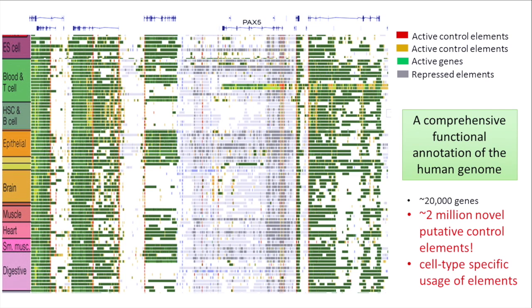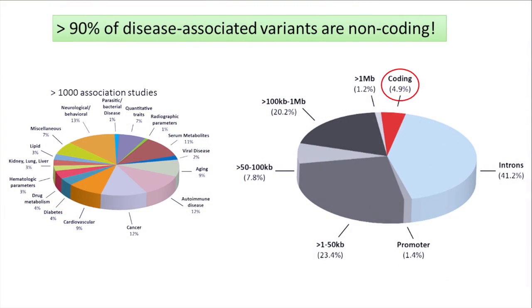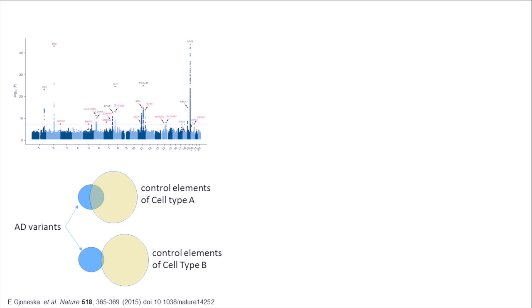After doing this analysis across the whole genome and integrating the entire data cube, we identified 2 million novel control elements in the human genome. These 2 million elements control just 20,000 genes — an extremely complicated control circuitry with highly cell-type-specific activity. This is relevant to disease because if you take the disease-associated variants found by genome-wide association studies, only about 5% actually break genes. The remaining 95% are outside genes in non-coding regions, affecting likely these control elements.